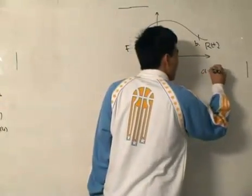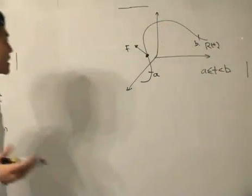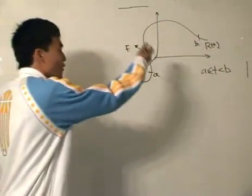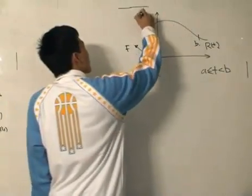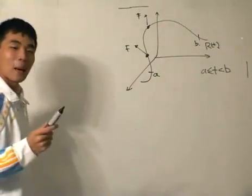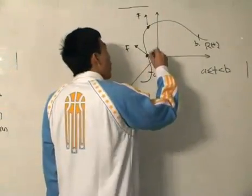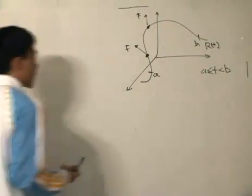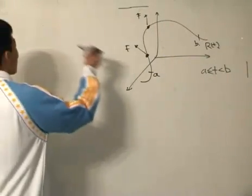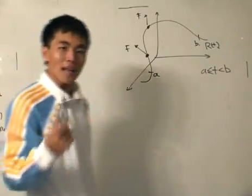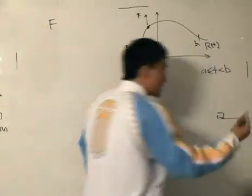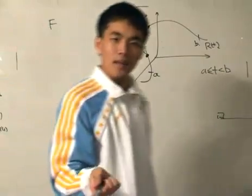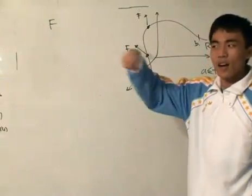Our target is to find the total work done by the variable force as the point moves from A to B. The force is variable — as the point moves along the curve, the force could be pointing in different directions. So we want the total work done by the vector field moving the point from A all the way to B. The direction the point is moving at any given moment is the tangent vector.